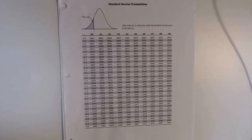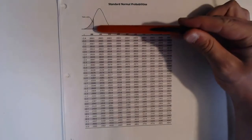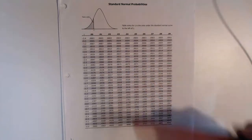What we have here is the Z distribution. That's the curve that we see here. Everything to the left of any value Z is what's contained in the numbers in the table.